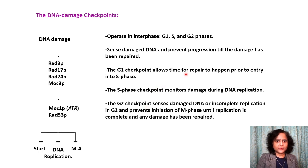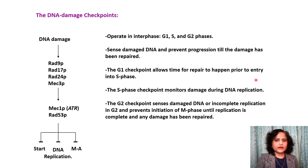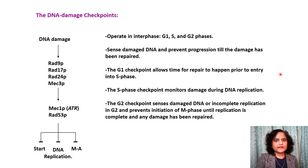The DNA damage checkpoint operates in interphase — in G1, S, and G2 phases — and senses DNA damage, preventing progression until the damage has been repaired. The G1 checkpoint allows time for repair prior to S phase entry. The S phase checkpoint monitors damage during DNA replication. The G2 DNA damage checkpoint senses damaged DNA or incomplete replication in G2, preventing initiation of M phase until replication is complete and damage is repaired.